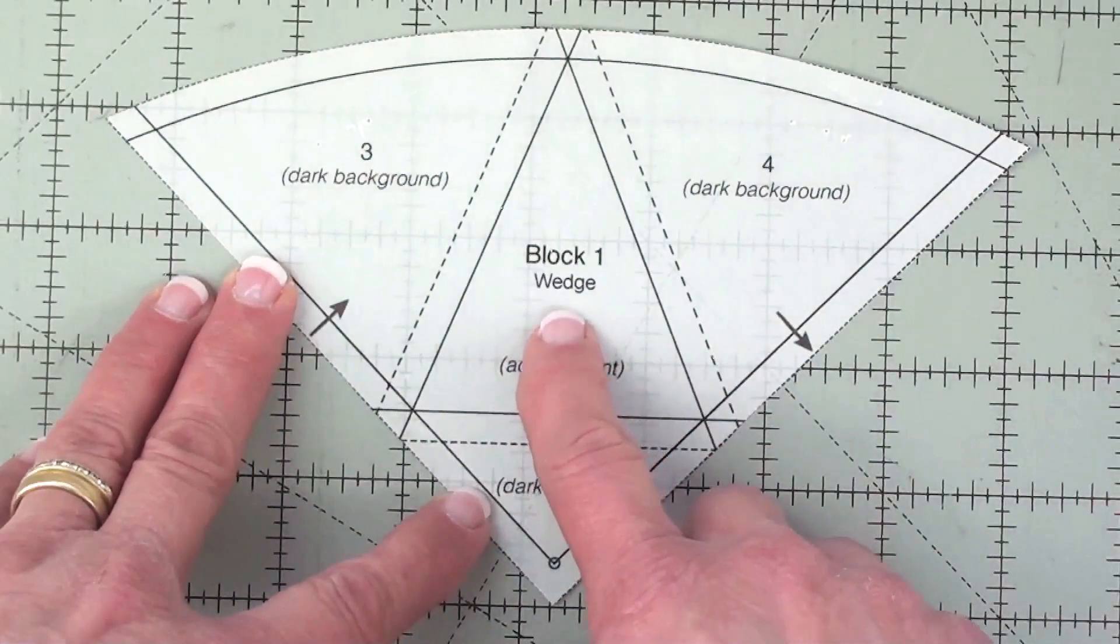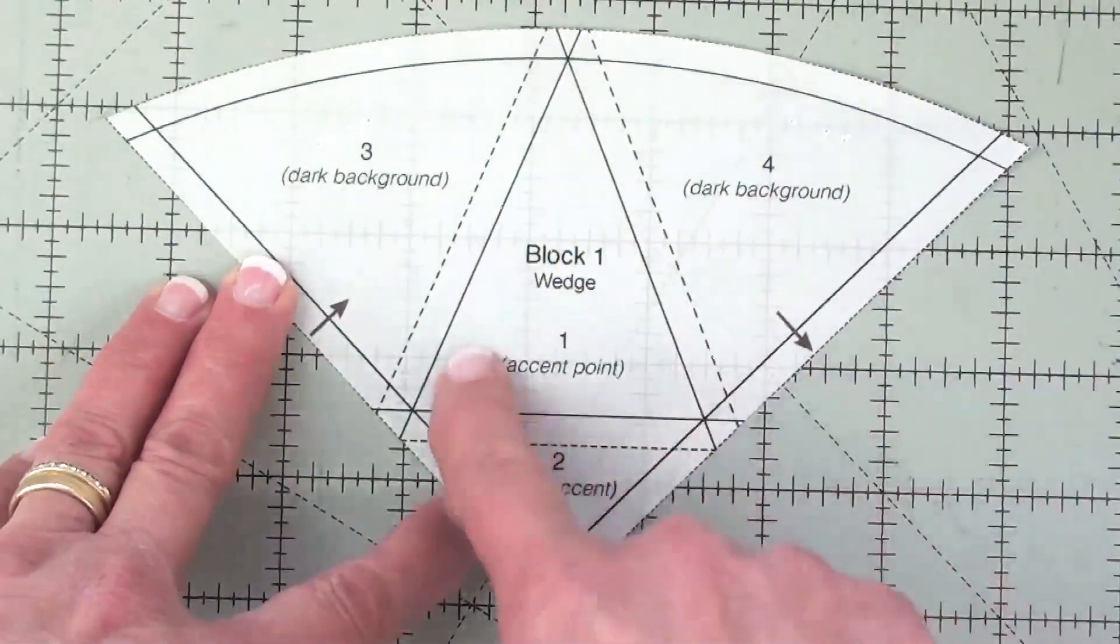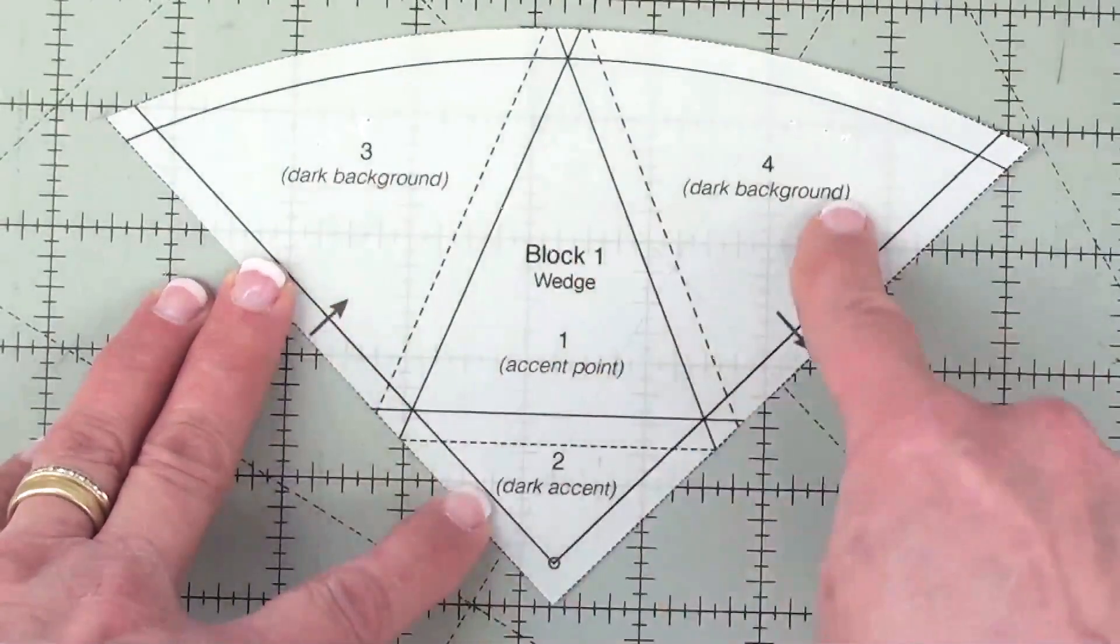This is the wedge that goes with block number one and you'll notice that the number one shape is right there with two, three, and four.